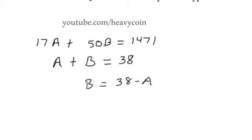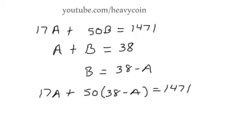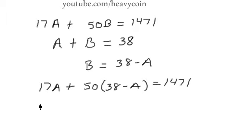Then I'm going to take B and plug it in. So we're going to have 17A plus 50 times 38 minus A equals 1471. We want to solve for A in this equation. So we're going to have 17A plus 50 times 38 is 1900 minus 50A equals 1471.